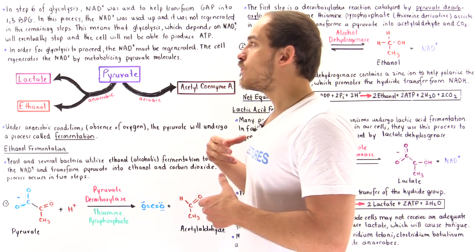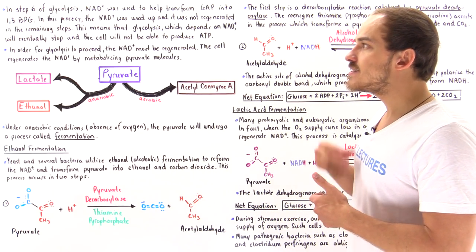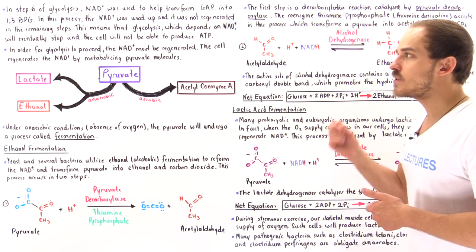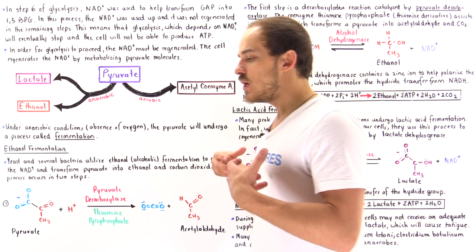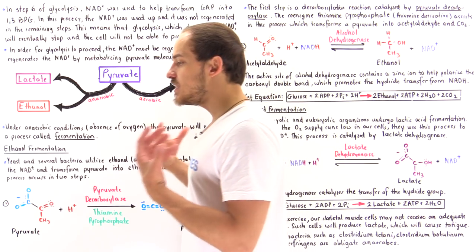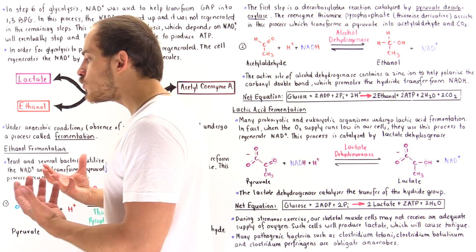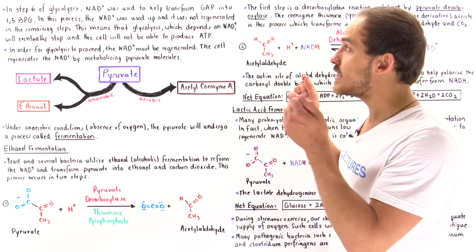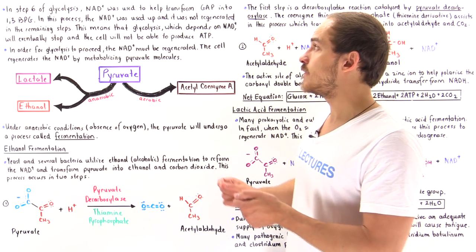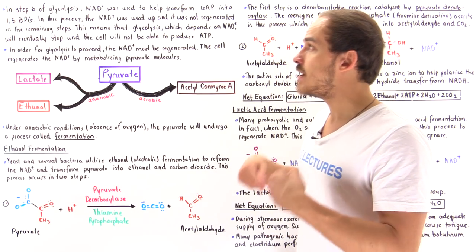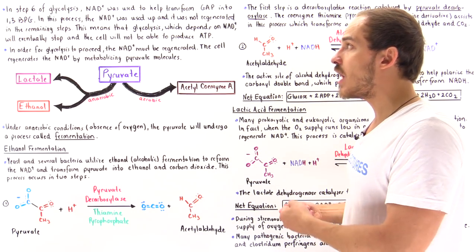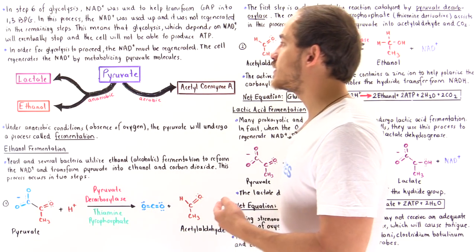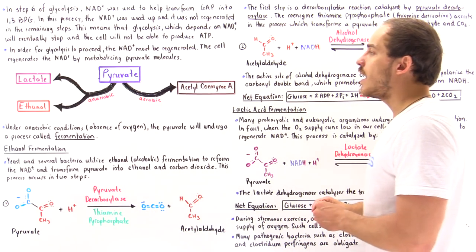For this not to happen, something else must be done after glycolysis takes place. Something must be done to regenerate that coenzyme — the NAD+ — that is necessary for the activity of GAP dehydrogenase, which catalyzes step 6 of glycolysis.